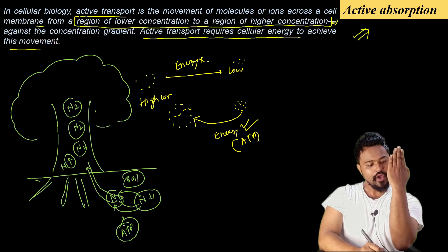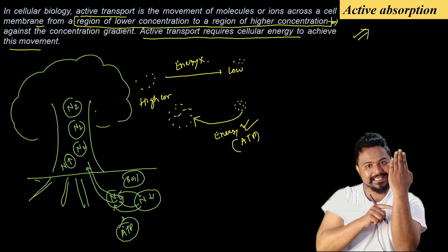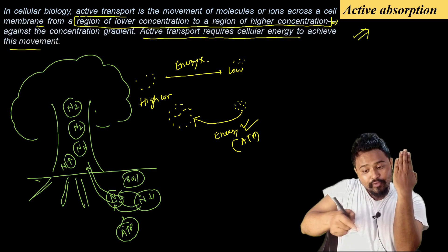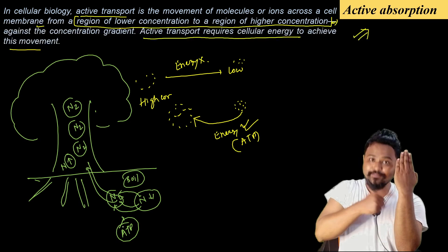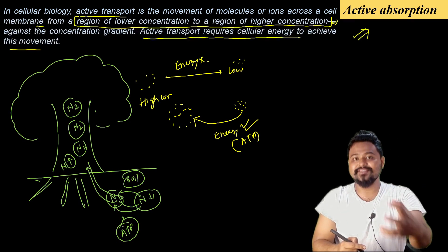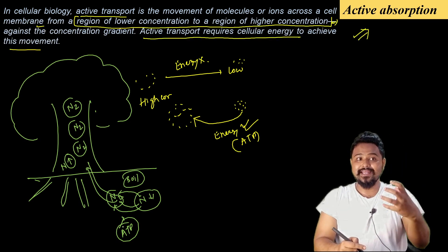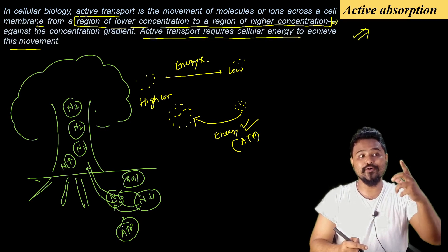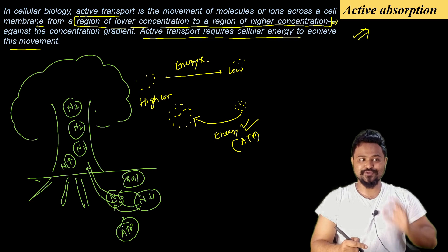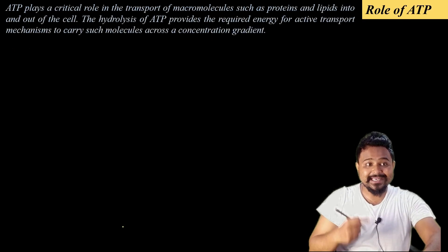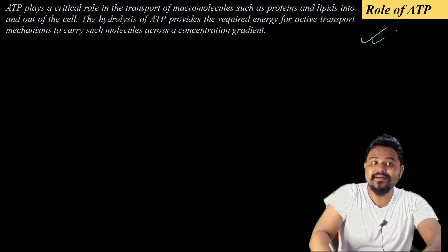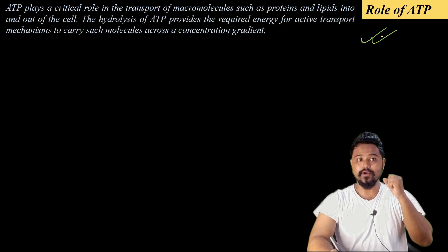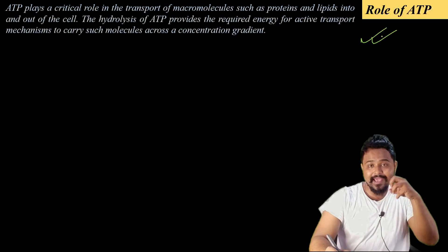To obtain important elements, the plant transports against the concentration gradient using energy. Even when internal amount is high and external amount is low, substances can be transported by utilizing energy. This is active absorption. ATP plays the main role in active absorption.